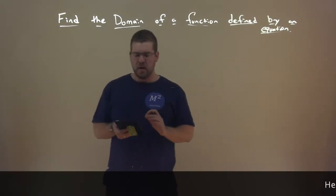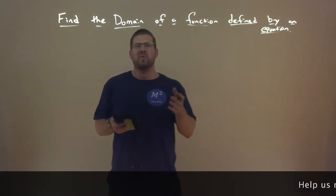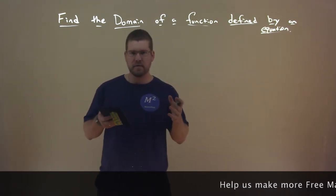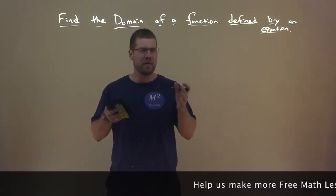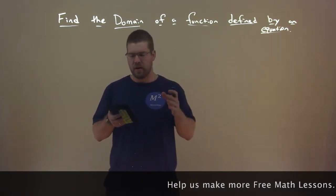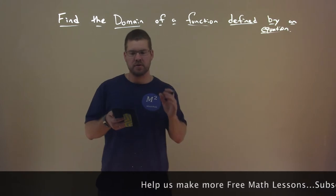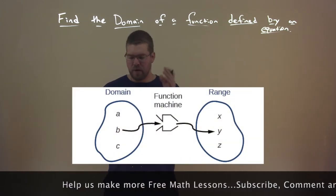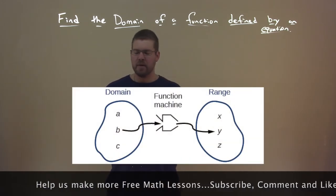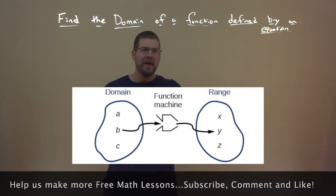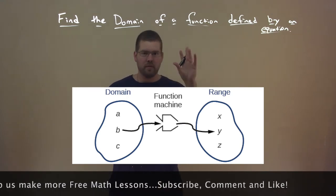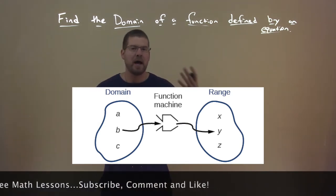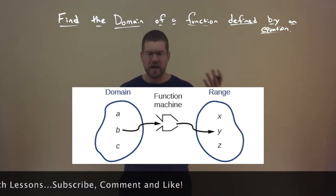So domain and range come together — they really define a function. Here's a nice little graphic. We have the domain A, B, and C. They go through what we call the function machine, and you get an output — some range.